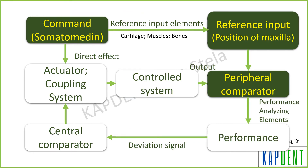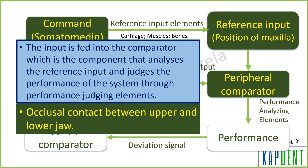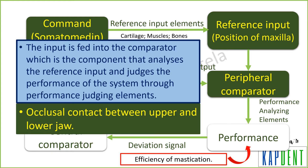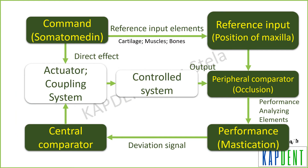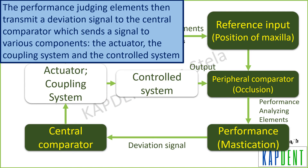The peripheral comparator analyzes the reference input and judges the performance of the system through performance judging elements, where occlusal contact between the upper and lower jaw serves as the comparator while efficiency of mastication is the performance. Any deviation from an optimal contact or performance, in the form of deviation signals, is detected by the central comparator, which further sends signals to various components in order to bring about the final output of the control system.